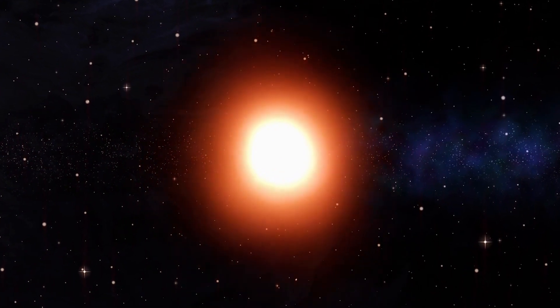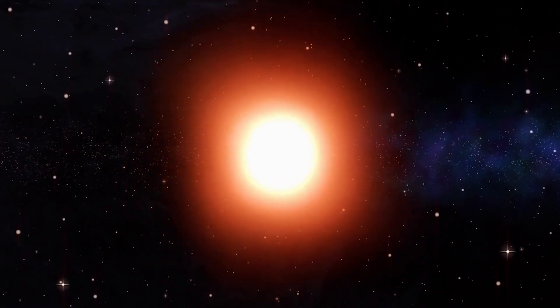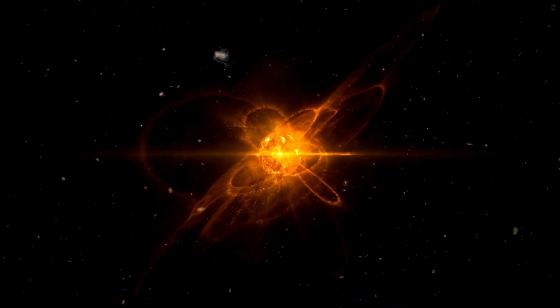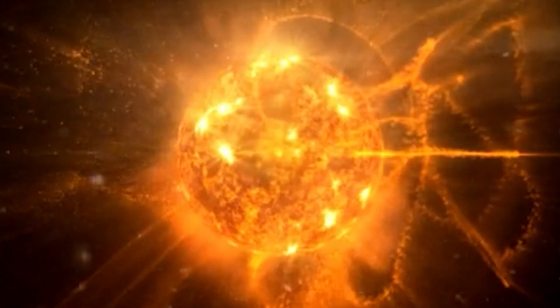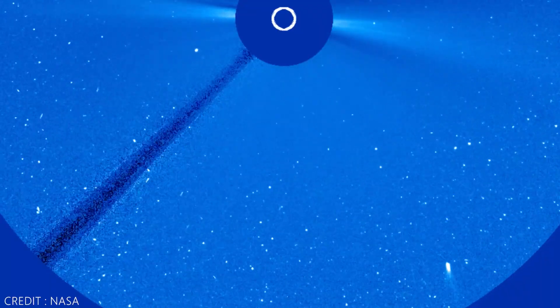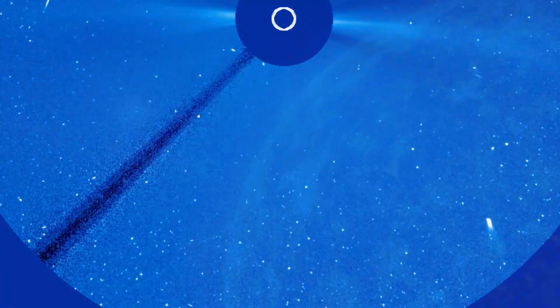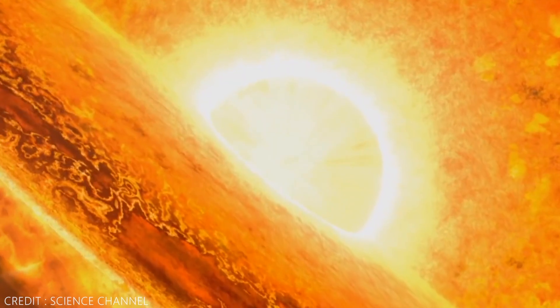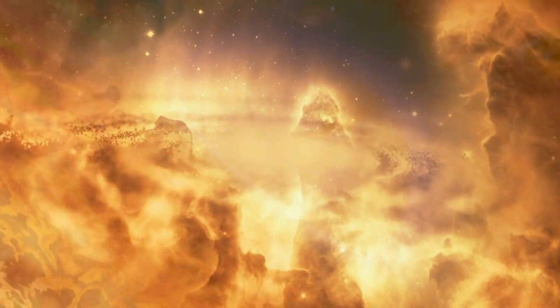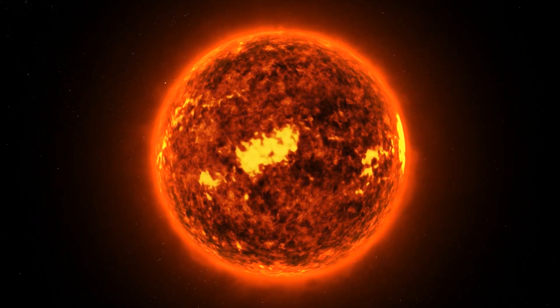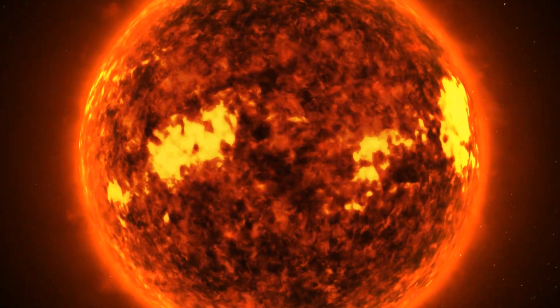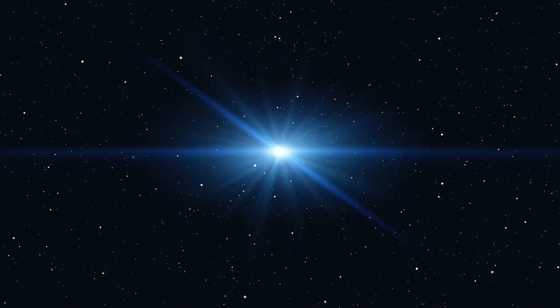The cause of these variations lies in the intricate interplay of convection currents, magnetic fields, and the immense heat and pressure within the star. These bright spots, known as stellar granules, are large convective cells where hot plasma rises from the star's interior and cools as it reaches the surface. As the plasma cools, it becomes denser and sinks back into the star, creating a continuous cycle. On Betelgeuse, these granules are so large that they can cover a substantial portion of the star's surface, leading to noticeable variations in brightness.